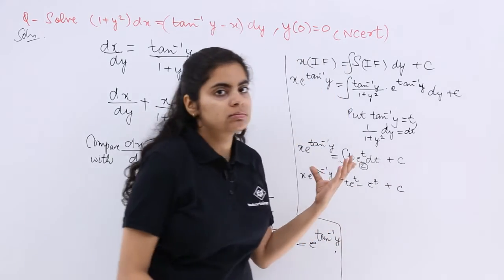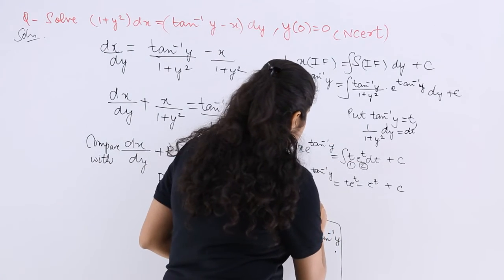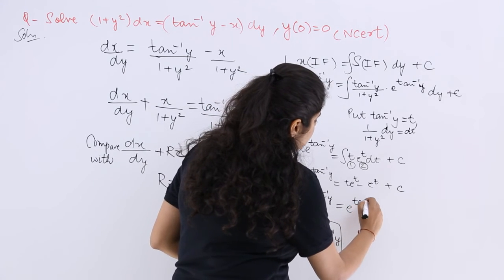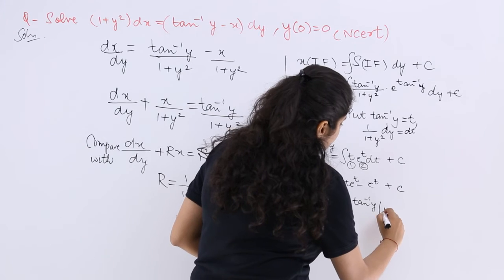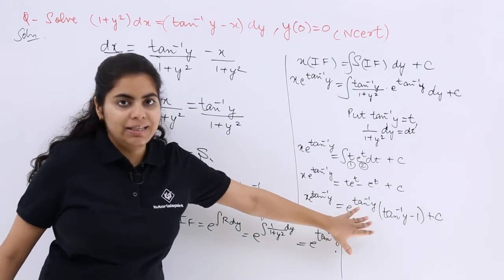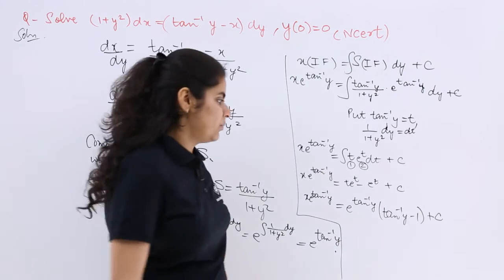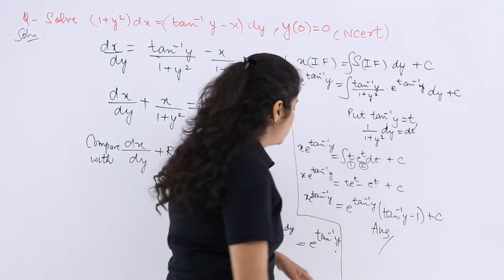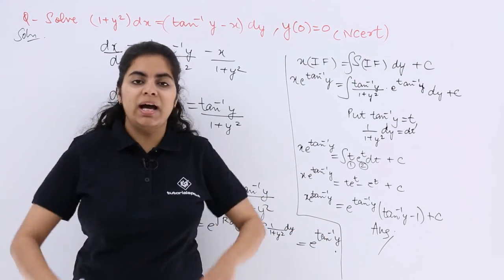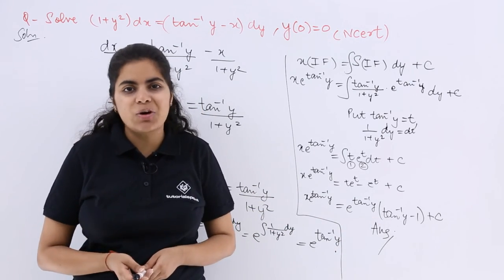But t should not remain in the final answer. Since t = tan⁻¹y, substituting back: x × e^(tan⁻¹y) = e^(tan⁻¹y) × (tan⁻¹y - 1) + c. Taking e^(tan⁻¹y) common and substituting back gives the final answer: x · e^(tan⁻¹y) = e^(tan⁻¹y)(tan⁻¹y - 1) + c, where c is the constant of integration.